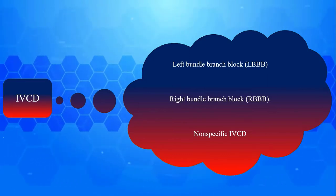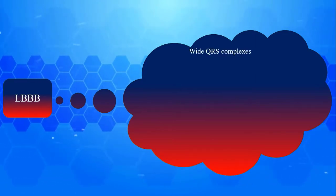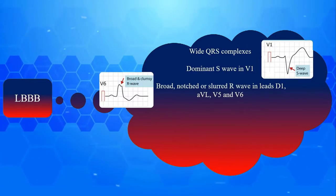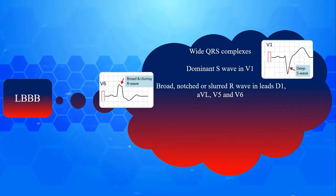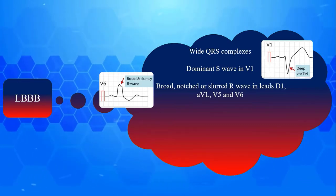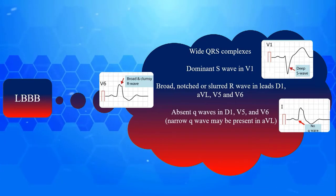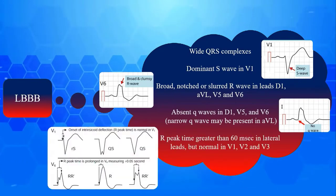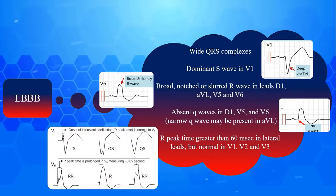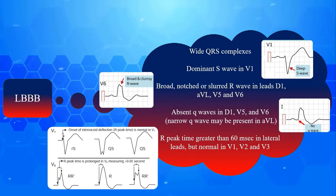Let's go through the electrocardiographic criteria of LBBB. There are five cardinal signs: 1) wide QRS complexes, 2) dominant S wave in V1, 3) broad notched or slurred R wave in leads D1, AVL, V5, and V6, or an occasional RS pattern in V5 and V6, 4) absent Q waves in D1 and V6, though in AVL a narrow Q wave may be present, 5) R peak time greater than 60 milliseconds in lateral leads but normal in V1, V2, and V3.